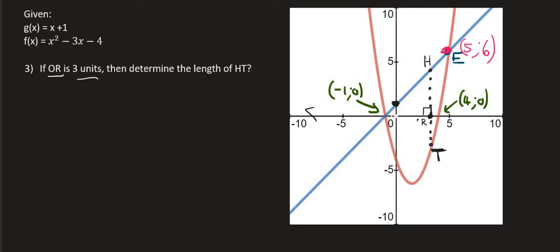So if they tell us that OR is three units long, what does that mean for the coordinates of R? Would you agree that that means that R's coordinates will be three and zero, because its X value is three? Now they've showed us that HT is perpendicular to the X axis. What that means is that it goes straight down like that.